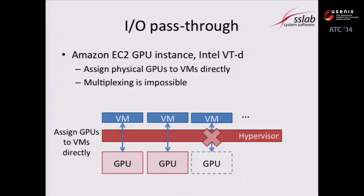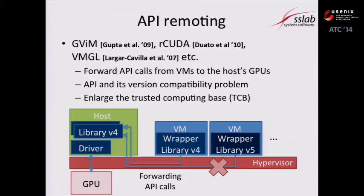IO pass-through assigns a physical GPU to one VM directly. While it provides close-to-native performance, a physical GPU is assigned to each VM, so the total number of VMs cannot exceed the number of available GPUs. Unlike IO pass-through, API remoting can multiplex GPUs. A wrapper library for a specific API is installed in each VM, and the library forwards API calls from the VMs to the host. This poses a problem of version incompatibility between libraries in the host and VM, and the trusted computing base is enlarged.